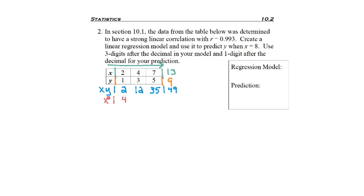Continuing on, I need to make my X squared column. 2 squared is 4, 4 squared is 16, and 7 squared is 49. Adding 4, 16, and 49, I get 69. This data is actually all in the 10.1 video. Y squared, 1 squared is 1, 3 squared is 9, 5 squared is 25. Adding 1, 9, and 25, we get 35.